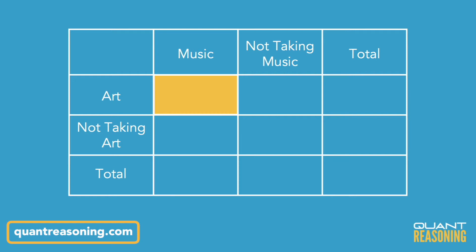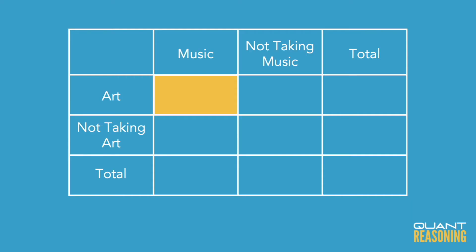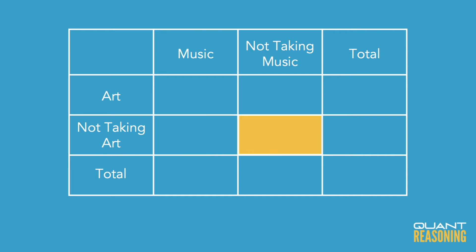Each of the cells in this diagram represents a unique group of students. You've got those who take both music and art, those who take art but not music, and everybody who takes art. Then you have those who take music but not art.